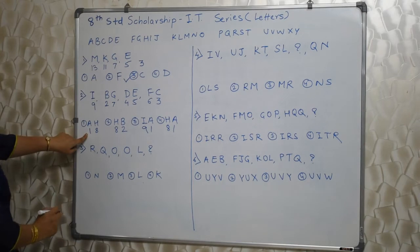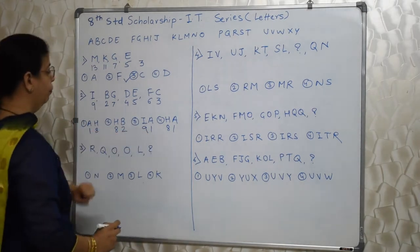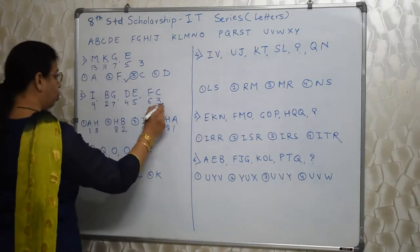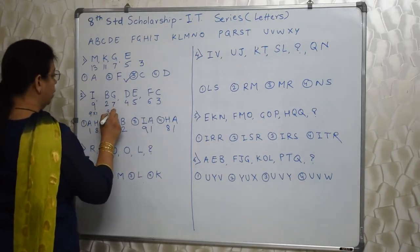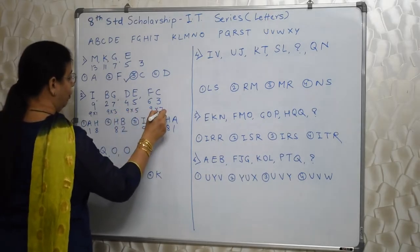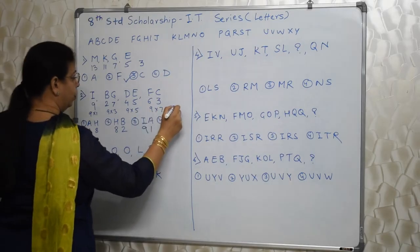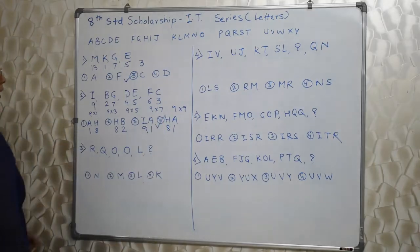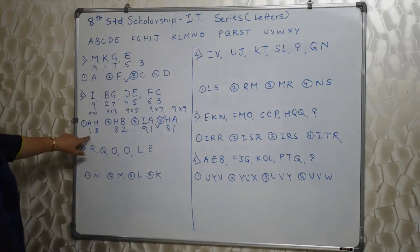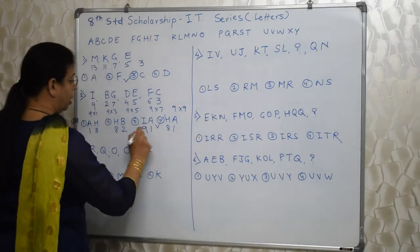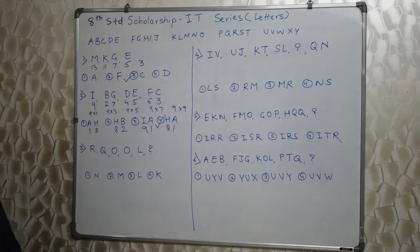So again from the option we need to take help. Don't just take first option as the correct one. Have patience. Now this is also multiple of 9, this is also multiple of 9. Then confusion. So again go to this. This is 9 into 1, this is 9 into 3, this is 9 into 5, this is 9 into 7. All odd multiples. So 9 into 9 is expected from us. So 81 is the correct option. You have to keep track of all the options.